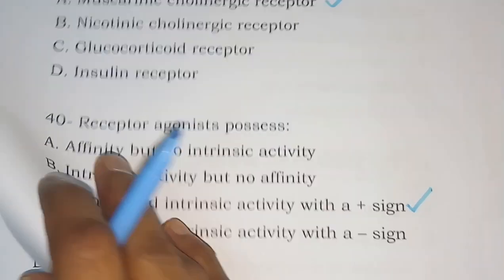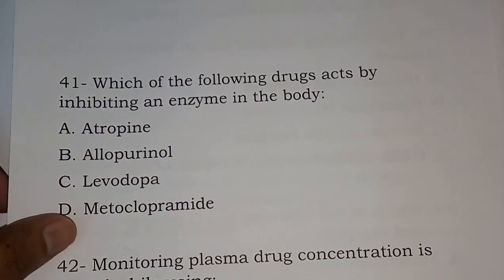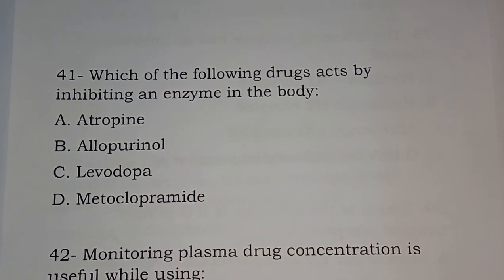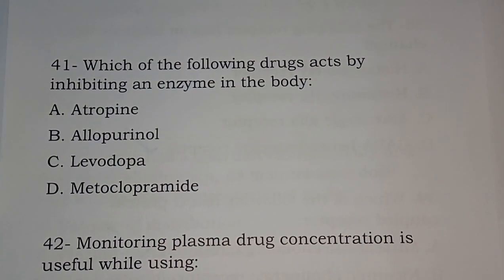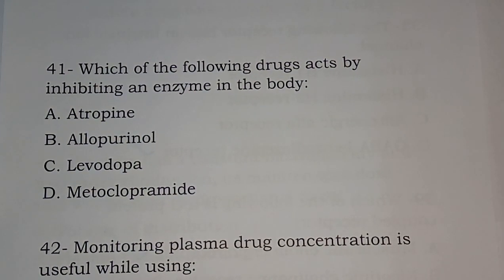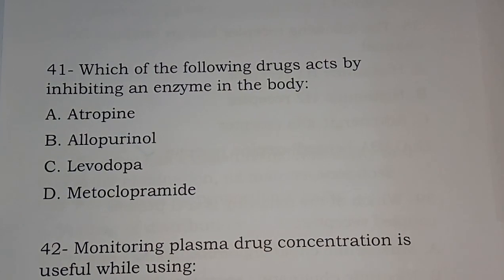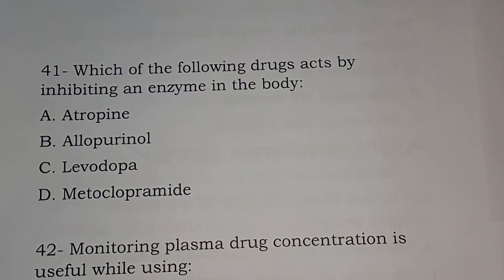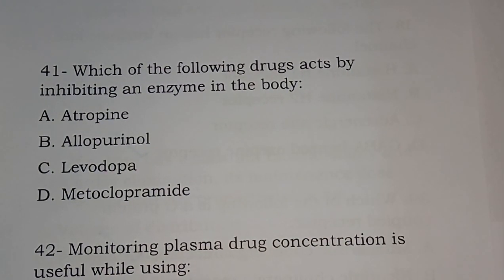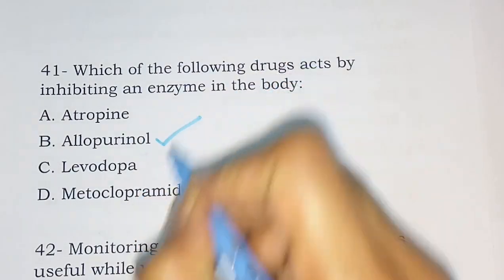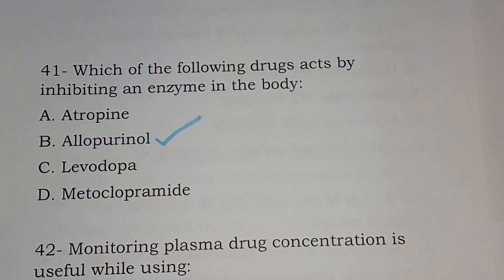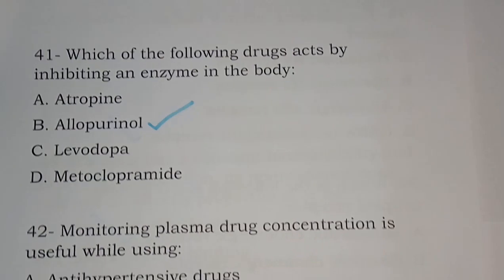Question 41: Which of the following drugs can act by inhibiting an enzyme in the body? Options: atropine, allopurinol, levodopa, metoclopramide. For this, you should know the mechanism of action. The correct answer is allopurinol, a xanthine oxidase inhibitor. That's what we will cover in coming videos.